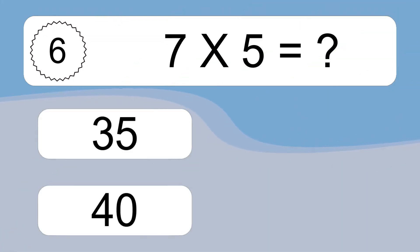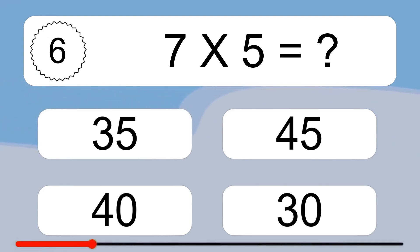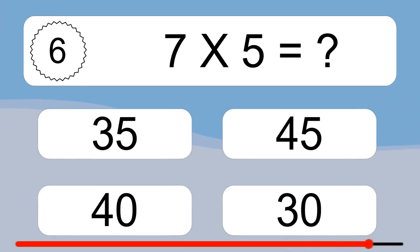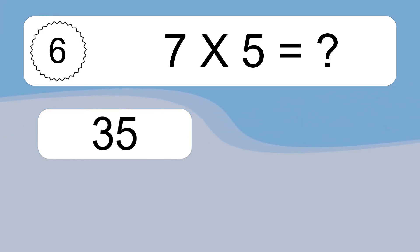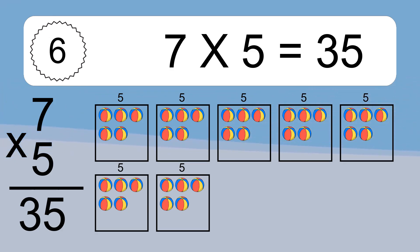7 times 5 equals what? 7 times 5 equals 35. We have 7 boxes, and each box has 5 colorful balls inside. If you count all the balls in all the boxes together, you will have 7 times 5 balls. This equals 35 balls.